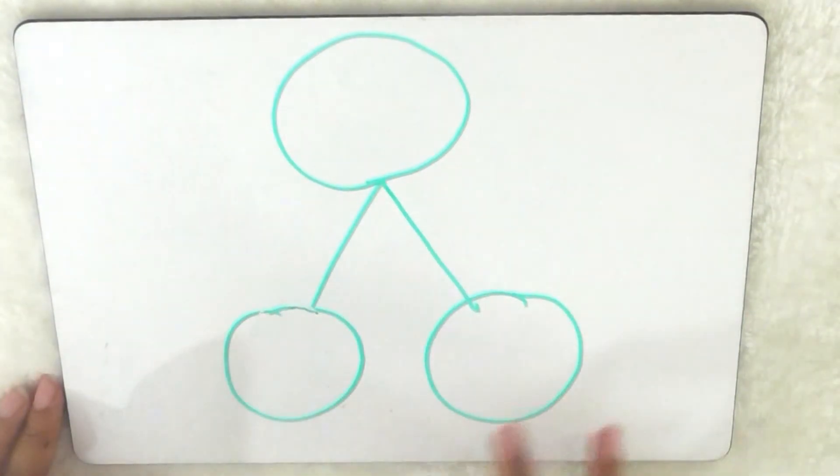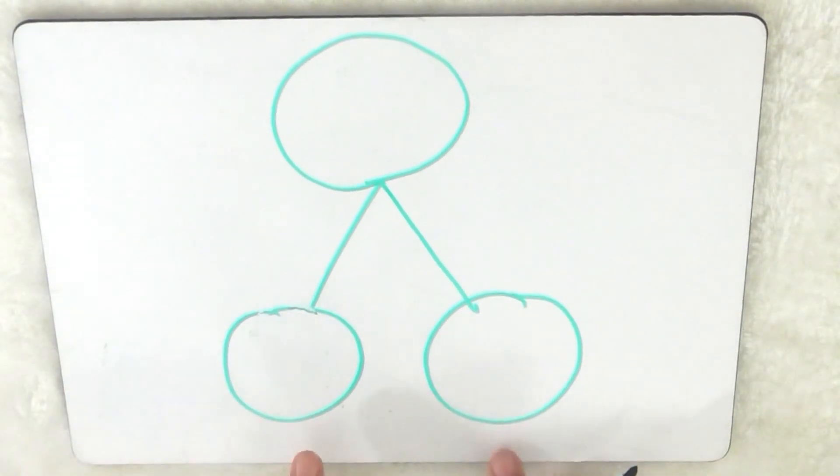Okay, so what I would like you to do is draw something like this. So two circles at the bottom and one at the top and lines joining towards the top. And I'd like you to try and double the number three. Off you go.